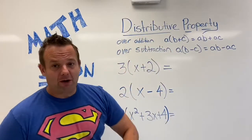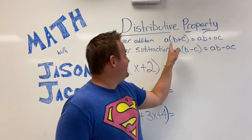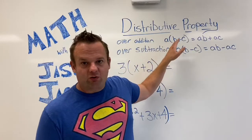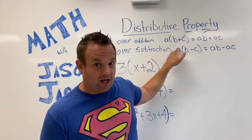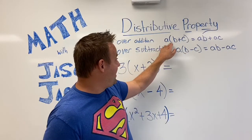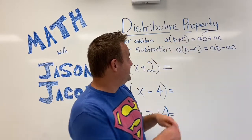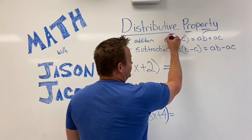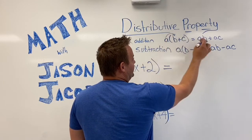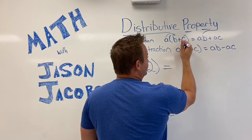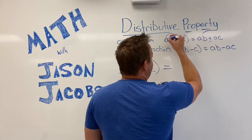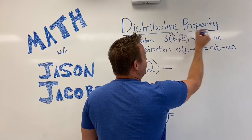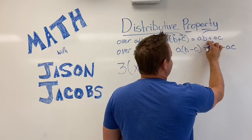So the distributive property over addition says that if you have A, and then when it's right by the parentheses, guys, that means you multiply. So A times the quantity B plus C. So what I like to do, it looks like this: A times B plus, there's the over addition part, and then you go A times C. So A times B plus A times C.